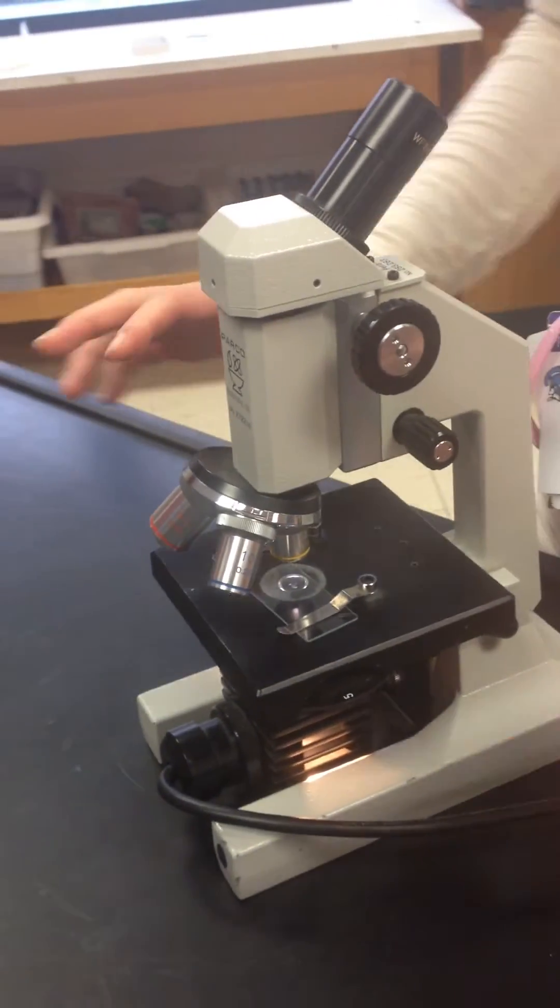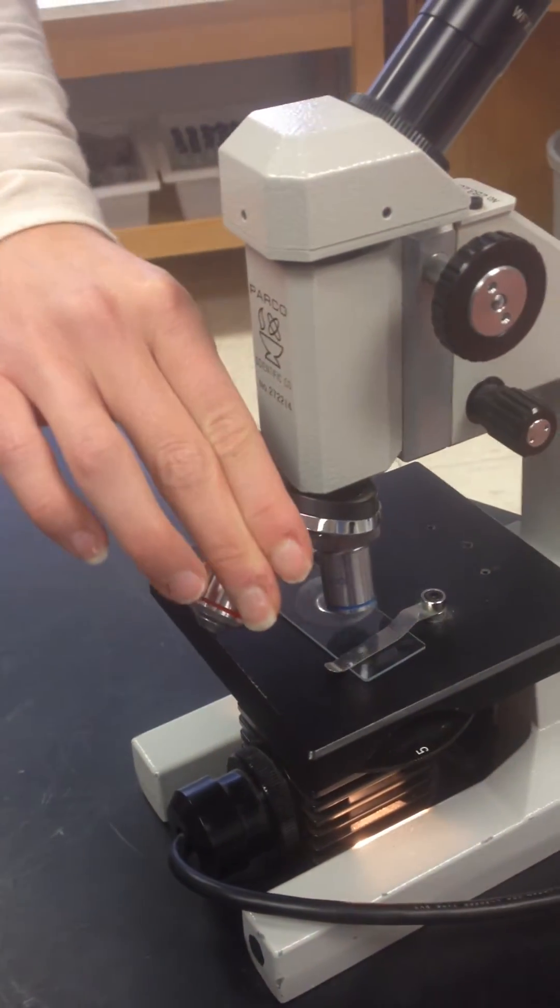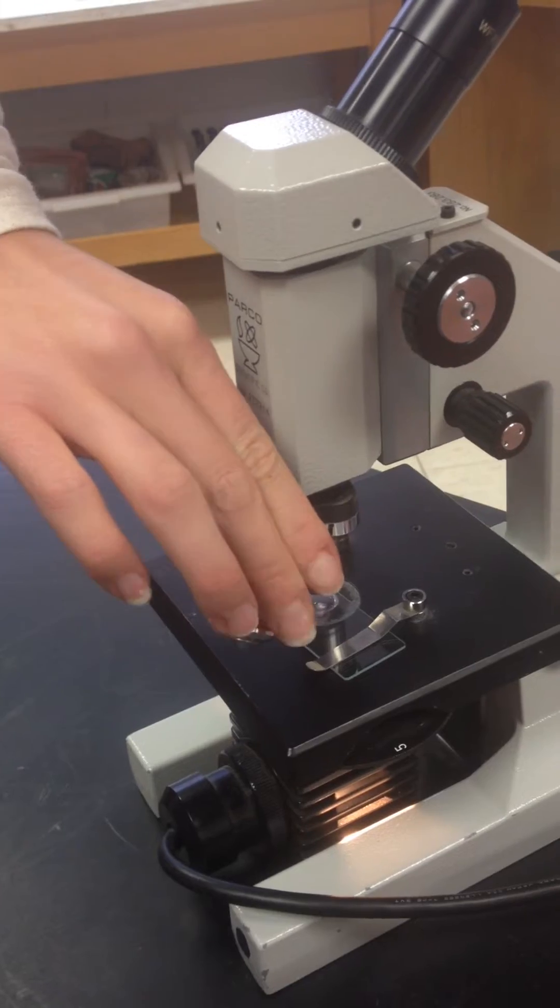Once it's perfect, you then are going to grab the revolving nose piece and rotate around until it clicks to low power.